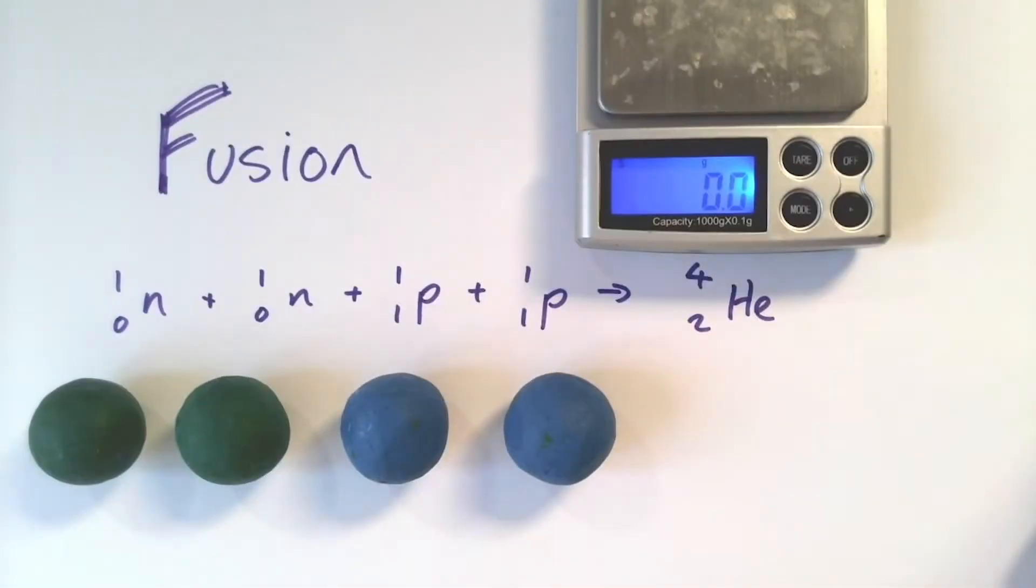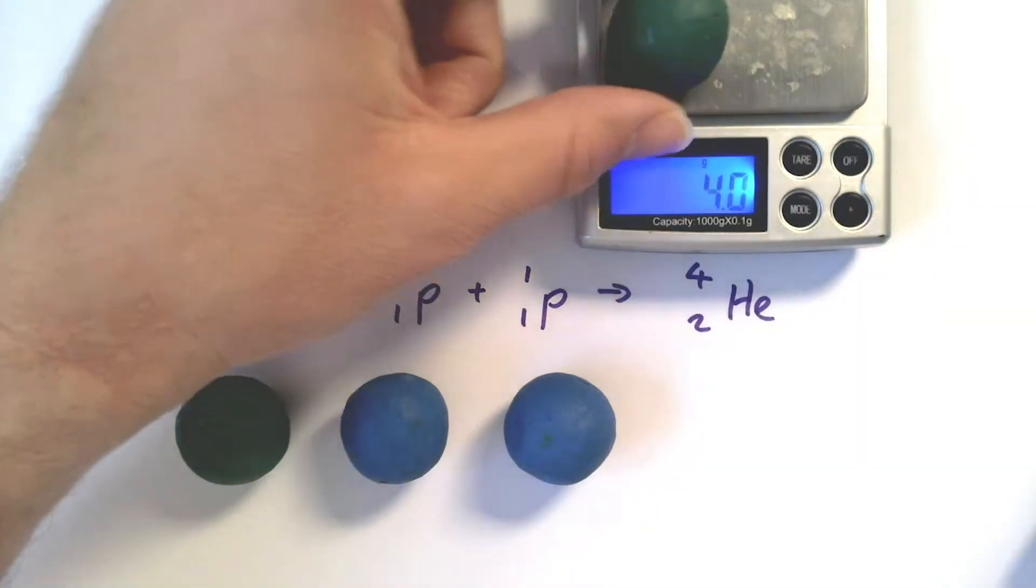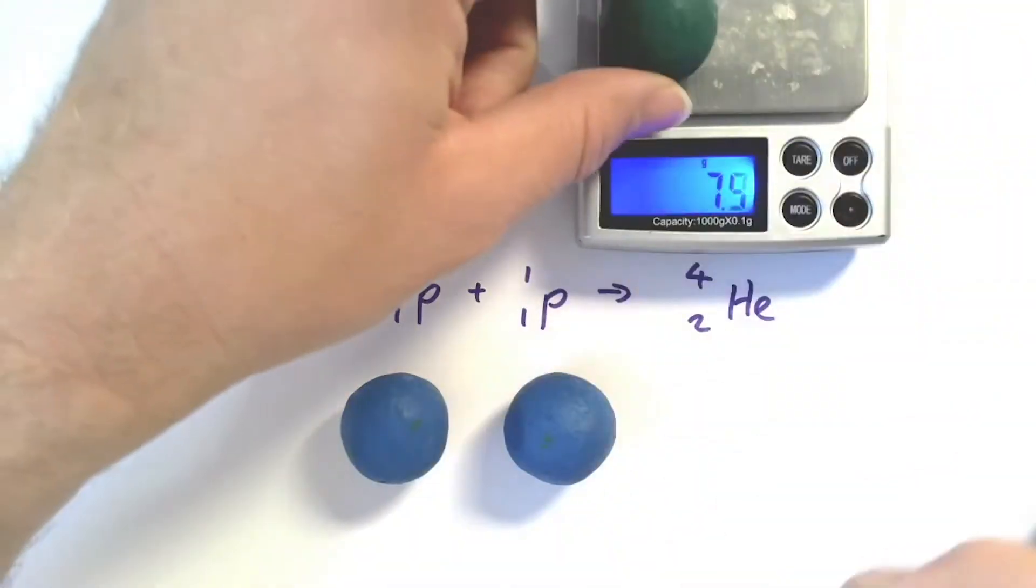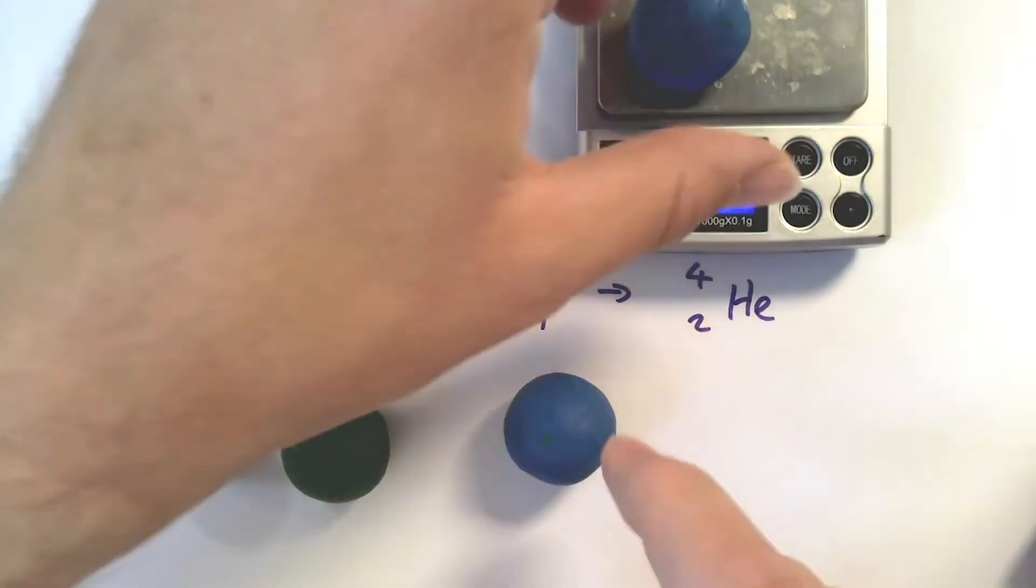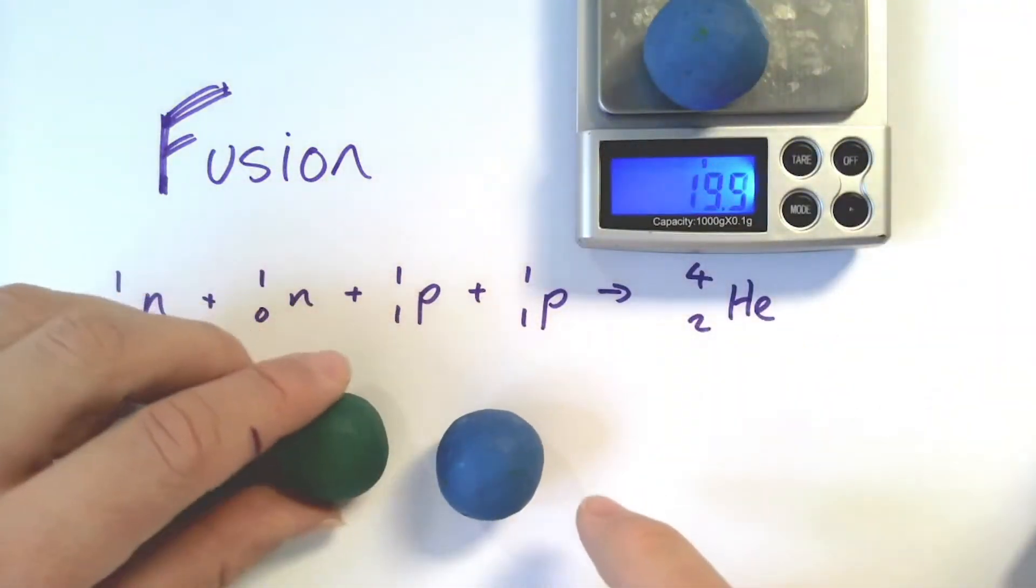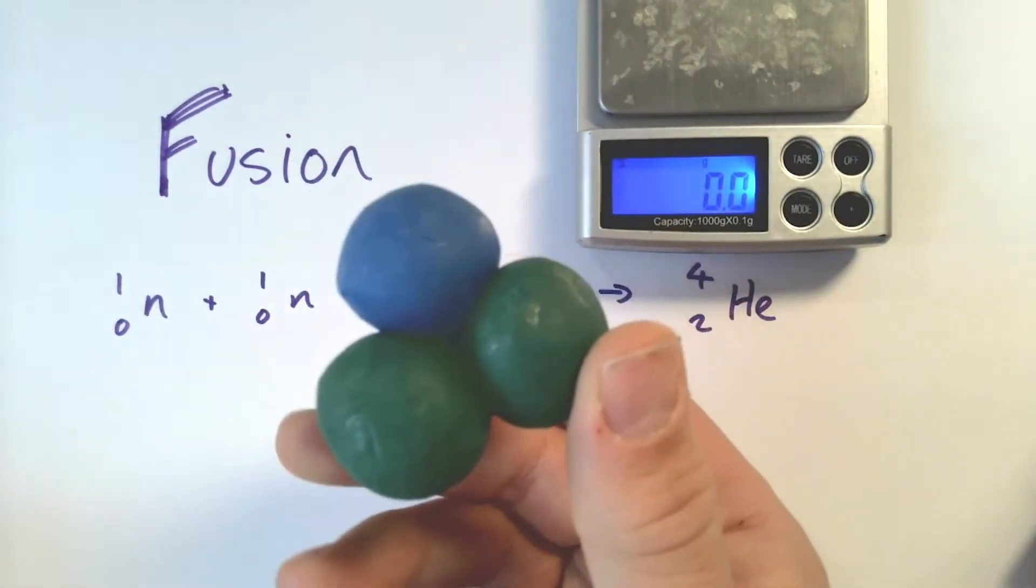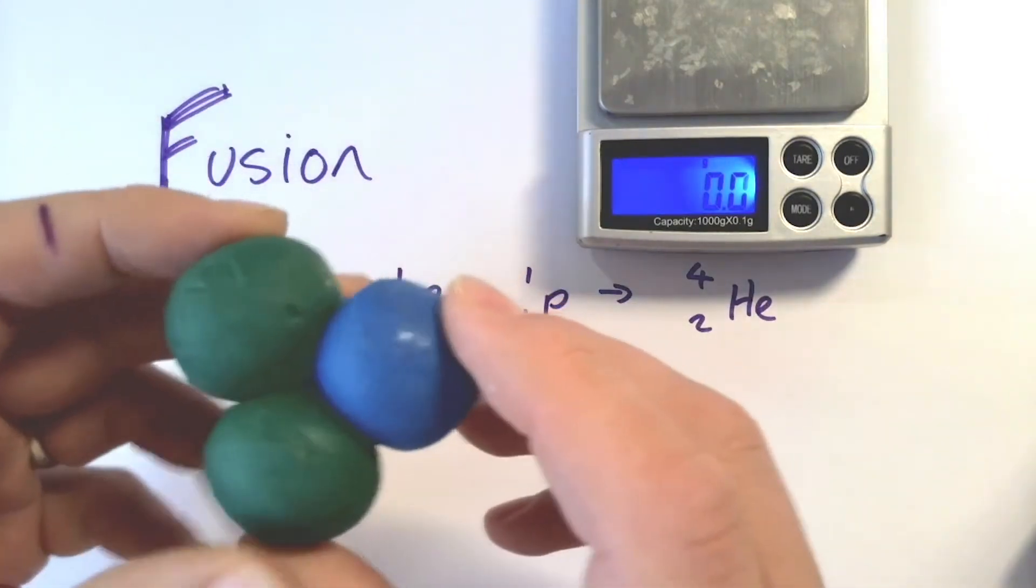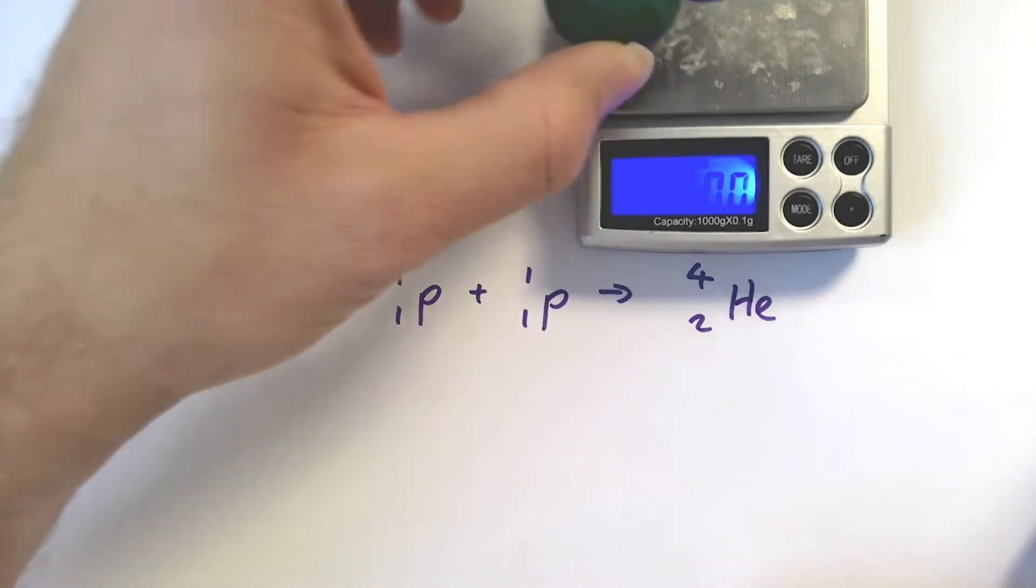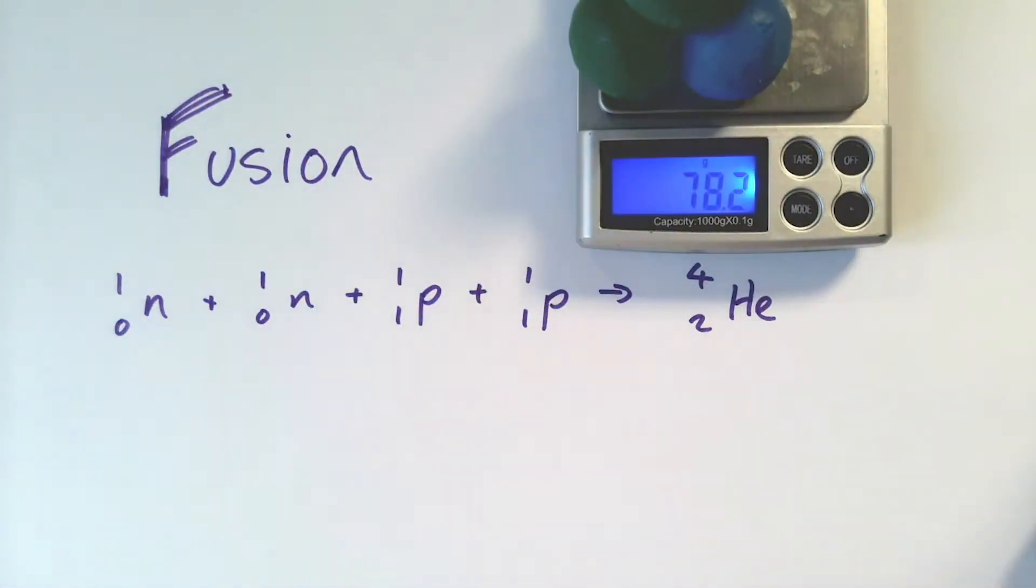I think it's a real challenge for students to get their heads around the fact that mass becomes energy in a nuclear process. So the way that I model it is by physically demonstrating that with some plasticine models. So I have four particles, each should be about 20 grams. They are two neutrons and two protons and if I squish them together I can get them to form a helium nucleus. Now everyone should assume that four lots of 20 will be 80 grams, but if I put that on we should be able to see we get something slightly less, and the difference between the 80 that we were expecting and the 78.2 that we got is called the mass loss.